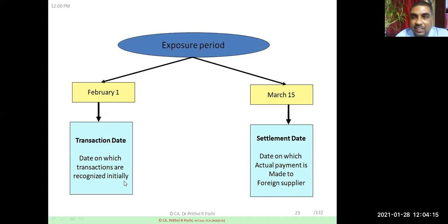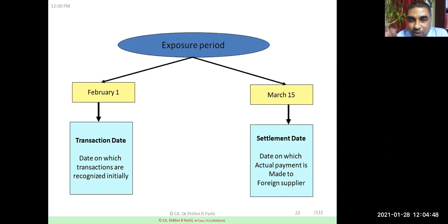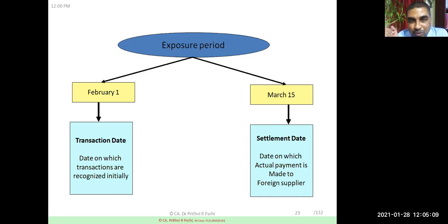If the exposure period is long, you are taking more risk because there is a possibility of higher fluctuation. If the exposure period is short, there is lower risk — the exchange rate is unlikely to jump dramatically in one day. The longer the exposure period, the greater the possibility of fluctuation and consequently more risk.